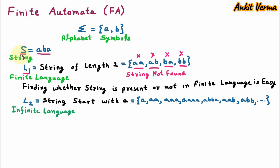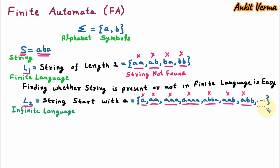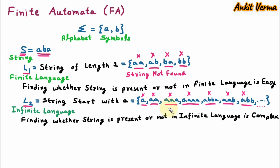Now we are going to find out whether string s, which is aba, is inside the infinite language L2. For that we compare aba with all strings one by one. Since there are infinitely many strings, this comparison goes on indefinitely. Finding whether a string is present or not in an infinite language is very complex — it is very tough because there are unlimited comparisons. For infinite languages, machines cannot take the decision easily; it is very complex for a machine to handle infinite language.